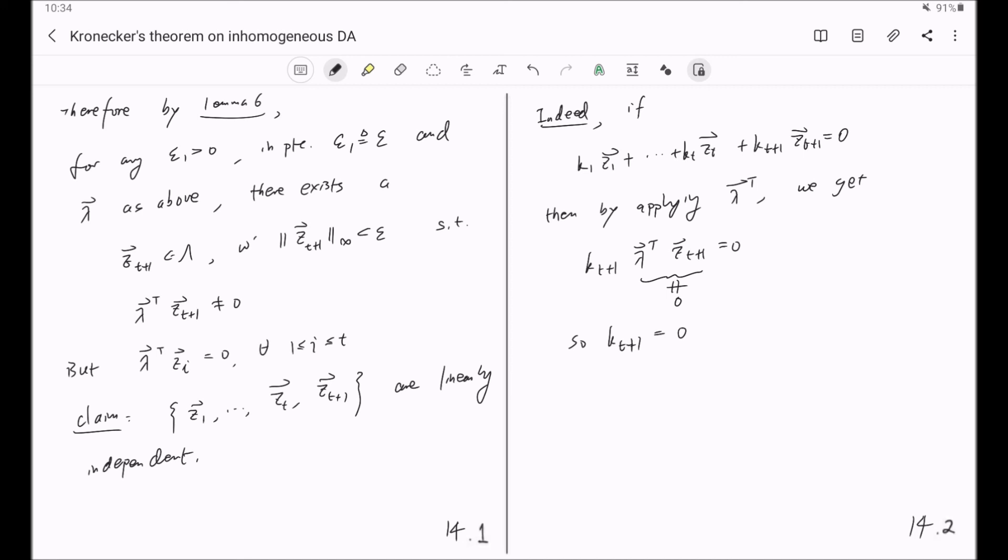And you look at the rest. So KT plus 1 is equal to 0. This implies that K1 through KT are all equal to 0. So I should add that this expression is over R, namely K1 through KT plus 1 are all real numbers. So this proves that those T plus 1 vectors are linearly independent over R.